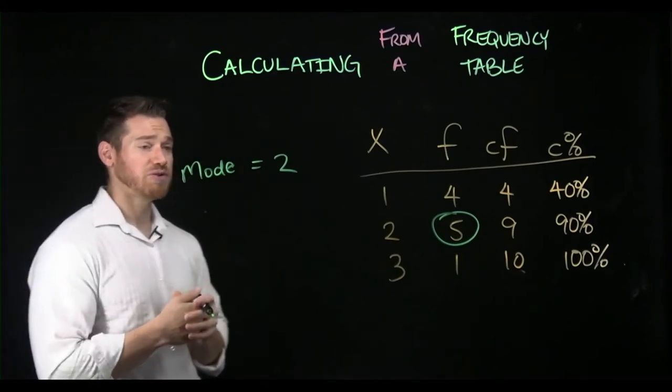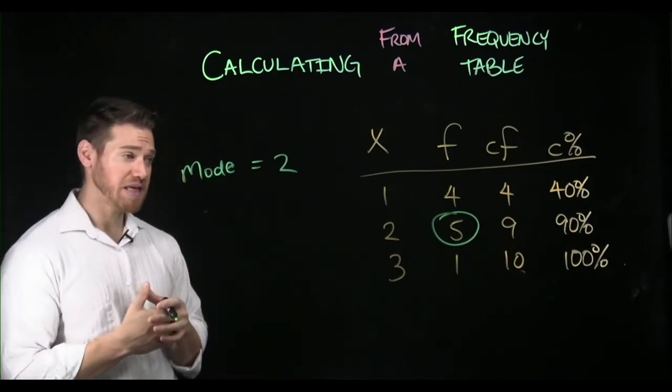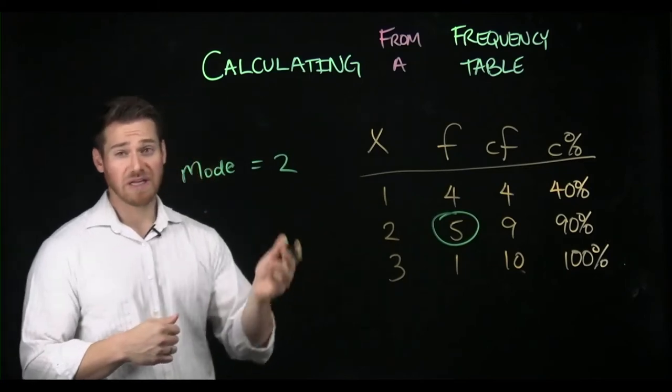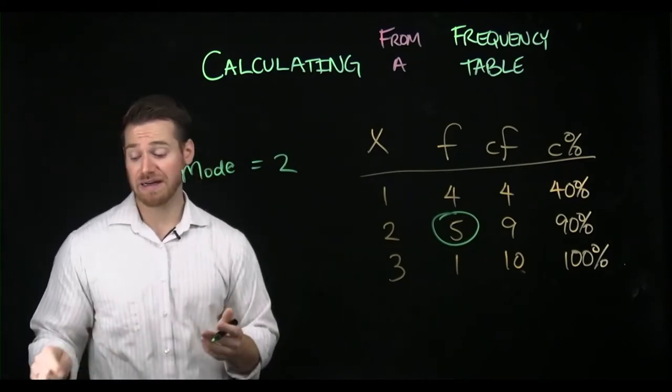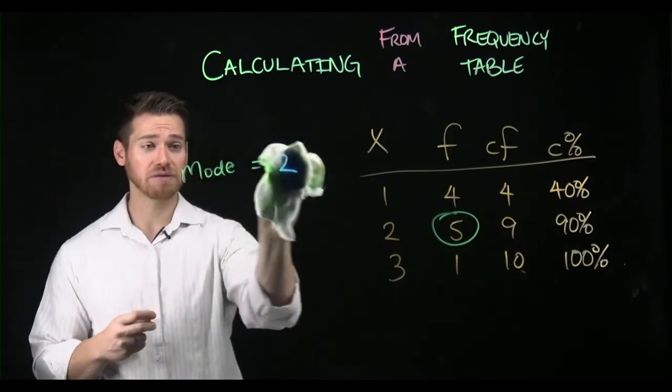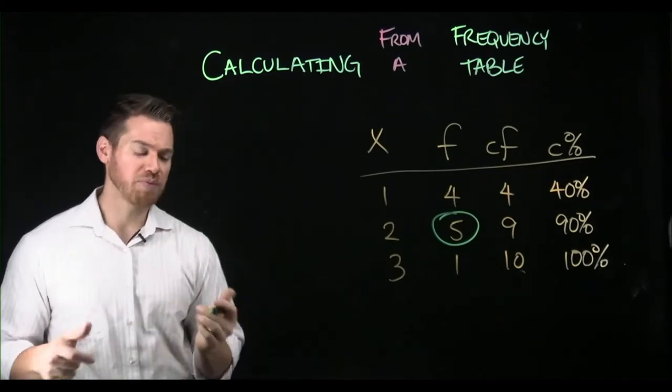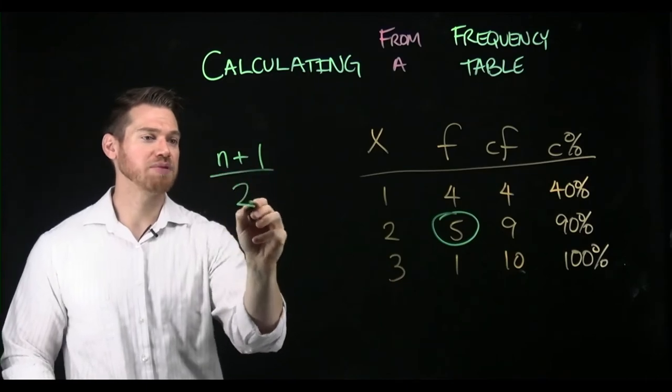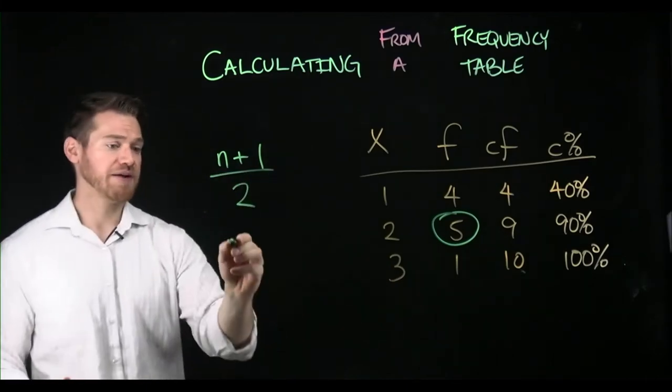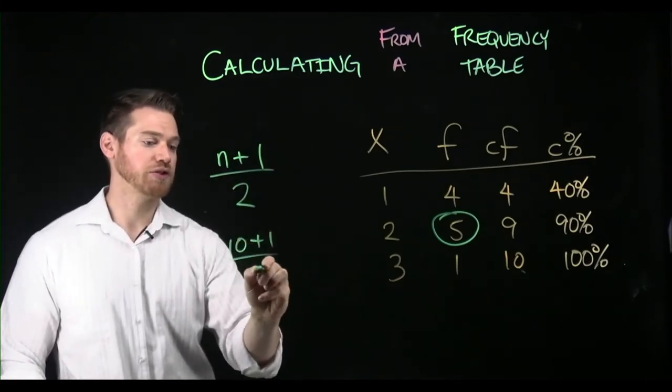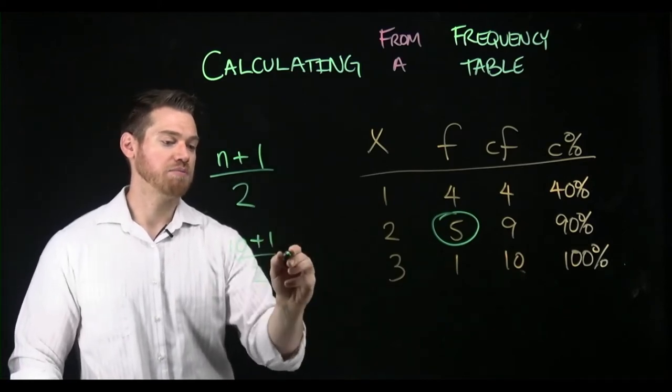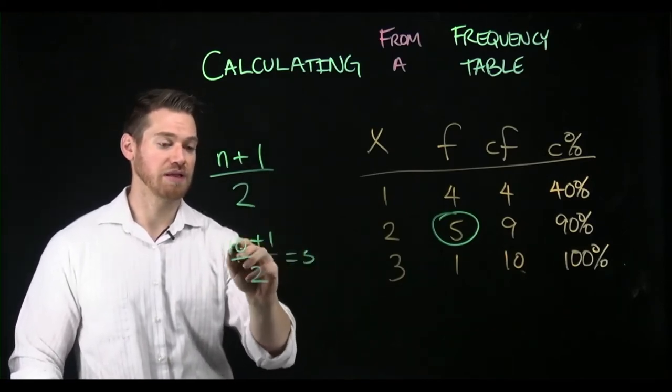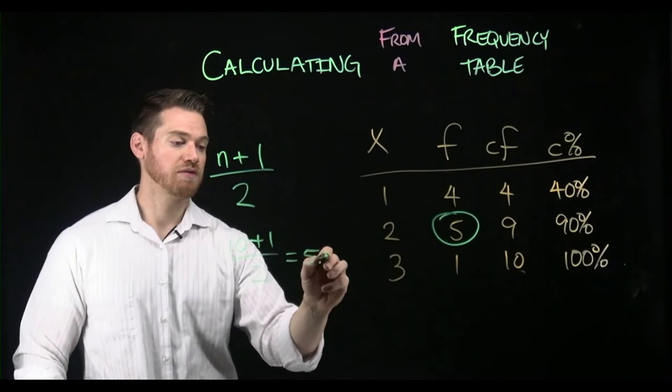So we can also do the median, because if you think about the median, it's the midpoint. So if we have 10 scores, we've got to find the midpoint or the median location. And we'll do this more next week. But the midpoint is gonna be found at n plus one over two. So here we have 10 for n plus one over two. Our midpoint is 11 over two, 5.5.